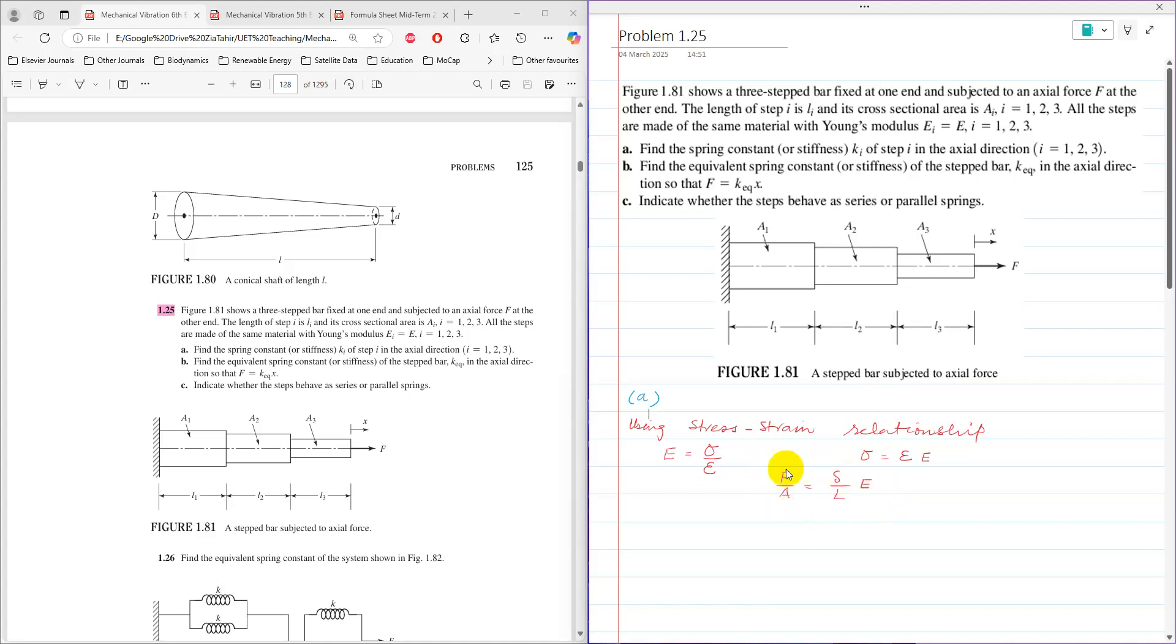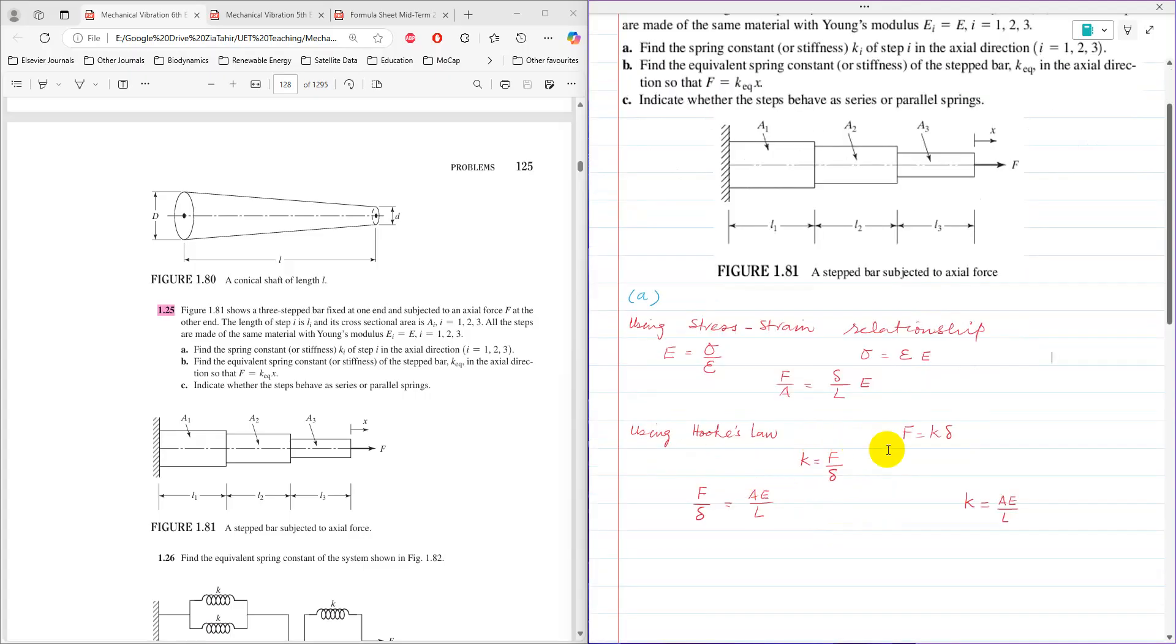This expression can be further modified using Hooke's law. Using Hooke's law, F is equal to K times elongation, which is basically F equals Kx. But in this case, because under that force the bars are going to elongate, that's why we use delta as elongation. It can be rearranged as K equals F over delta. So now the expression from stress-strain can be rearranged: F over delta equals AE over L. So now F over delta is K, which equals AE over L.